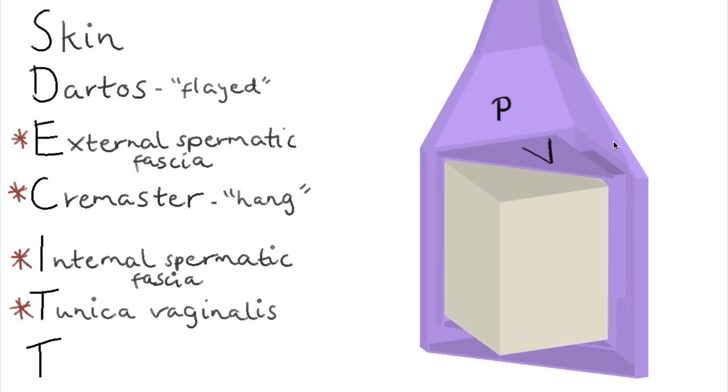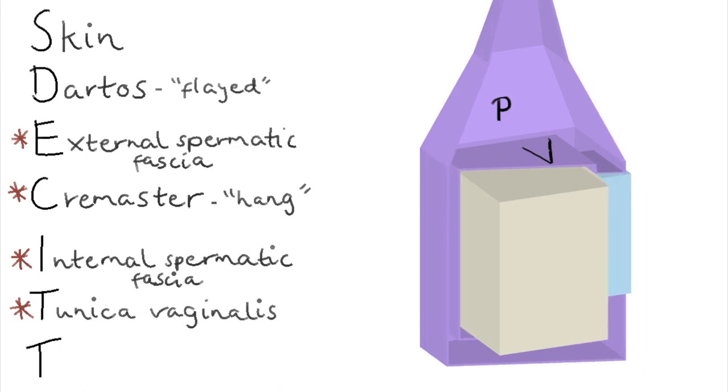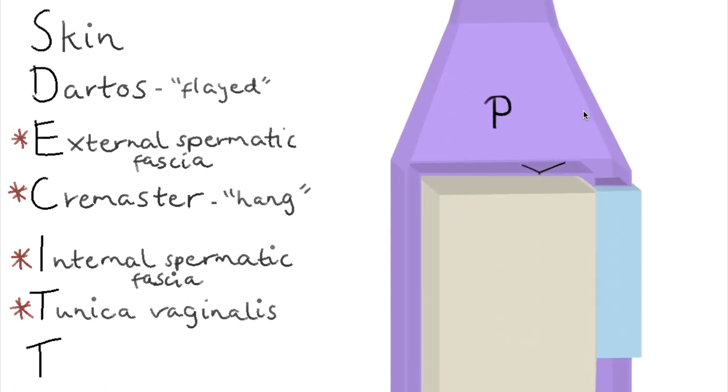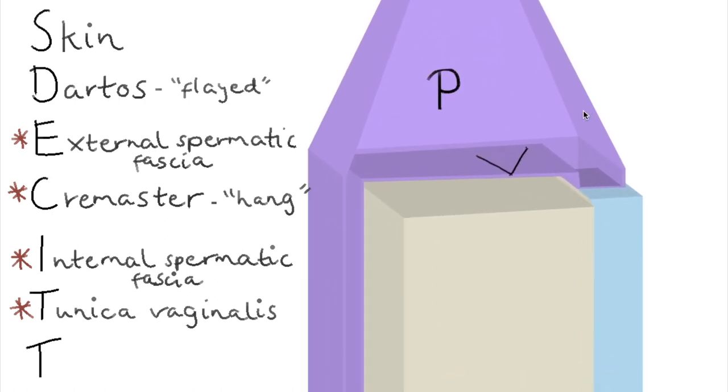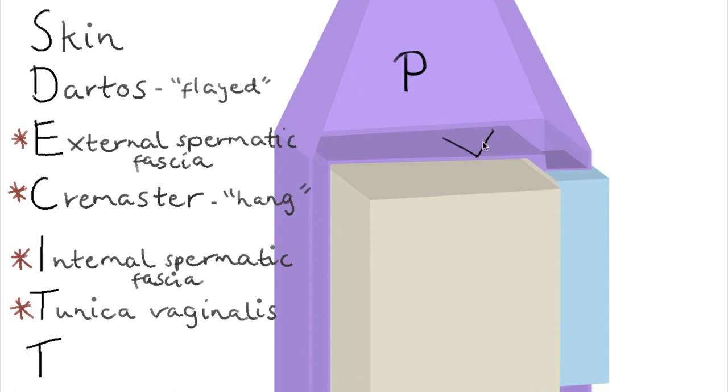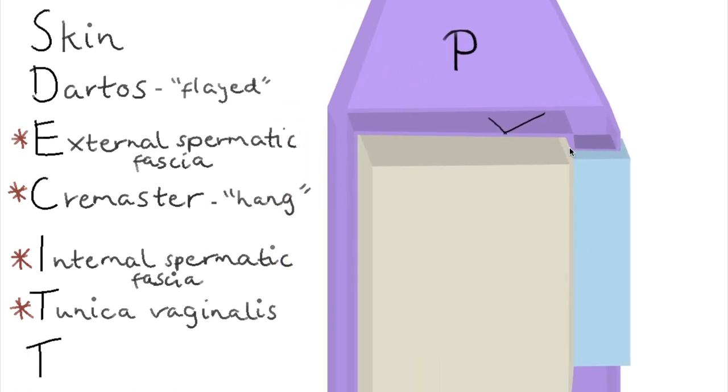Now just bear with me for a moment. I'm going to rotate this because I want to show you how the tunica vaginalis reflects back on itself. Just like the peritoneum, as this is one continuous sheet, it reflects back on itself like so.